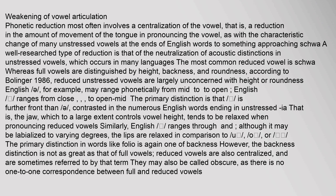Weakening of vowel articulation: phonetic reduction most often involves a centralization of the vowel — that is, a reduction in the amount of movement of the tongue in pronouncing the vowel, as with the characteristic change of many unstressed vowels at the ends of English words to something approaching schwa. A well-researched type of reduction is the neutralization of acoustic distinctions in unstressed vowels, which occurs in many languages. The most common reduced vowel is schwa, whereas full vowels are distinguished by height, backness, and roundness. According to Bollinger (1986), reduced unstressed vowels are largely unconcerned with height or roundness.